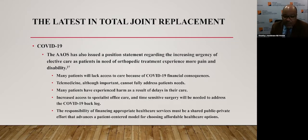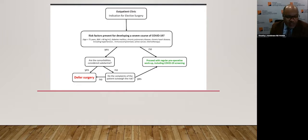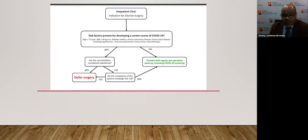The responsibility of financing appropriate healthcare services must be a shared public-private effort that advances the patient-centered model for choosing affordable healthcare options. The AAOS created an algorithm for how to choose whether to perform surgery during restrictions. When you see a patient who needs a total hip or total knee replacement, you consider their risk factors — age over 75, BMI over 40, diabetes mellitus, COPD, heart disease, hypertension, or immunocompromised status such as active cancer or chemotherapy. If they don't have these factors, you can proceed with your regular preoperative workup including COVID-19 screening. If they do have comorbidities, you assess whether they are substantial — if so, delay surgery; if not substantial, weigh whether the patient's complaints outweigh the risk and proceed with surgical planning or defer accordingly.